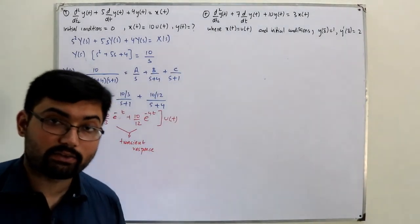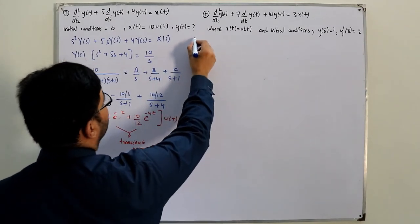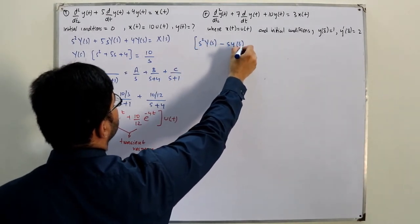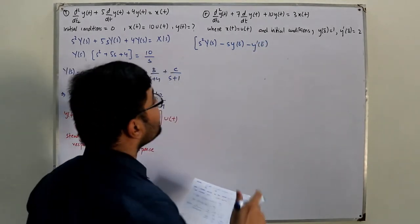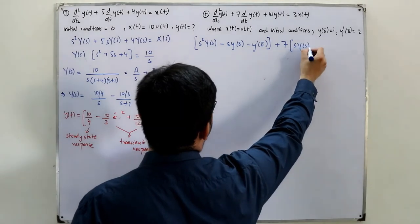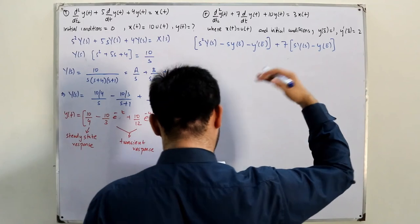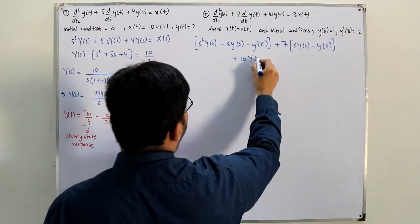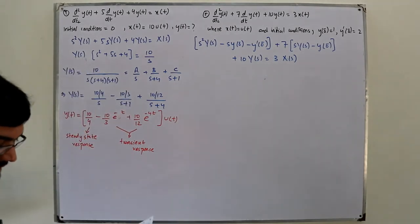Since initial conditions are nonzero, we use the unilateral Laplace transform derivative formula. Taking the Laplace transform of the second derivative gives s²Y(s) - s·y(0⁻) - y'(0⁻), and for the first derivative: sY(s) - y(0⁻). Substituting into the equation gives [s²Y(s) - sy(0⁻) - y'(0⁻)] + 7[sY(s) - y(0⁻)] + 10Y(s) = 3X(s).